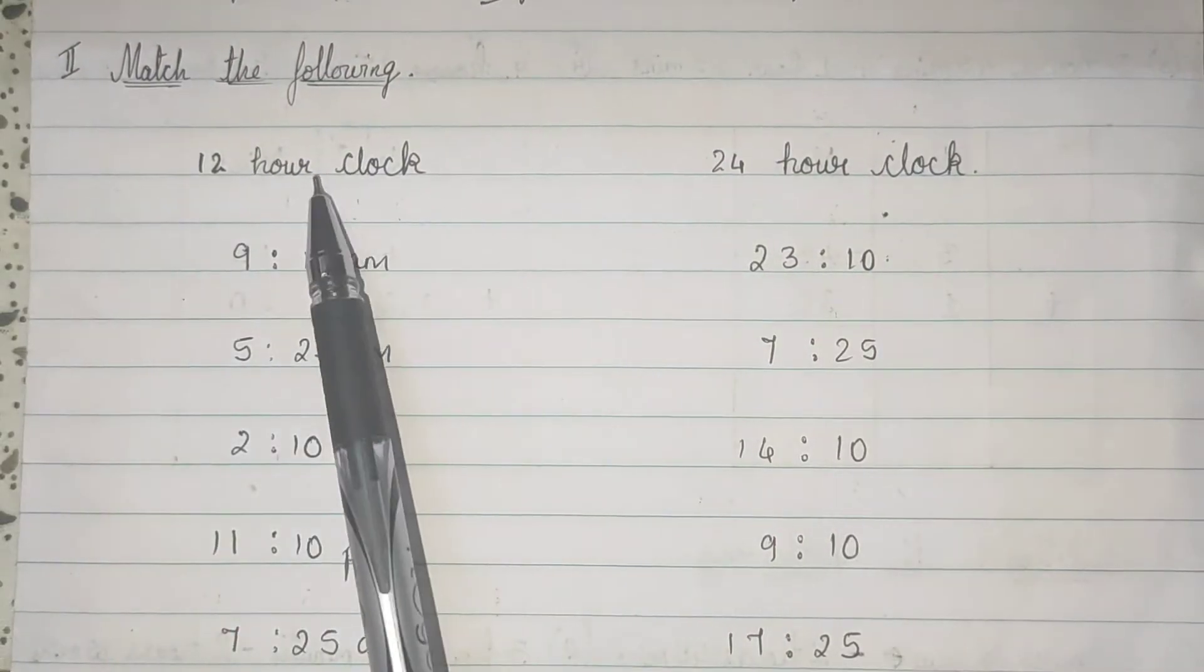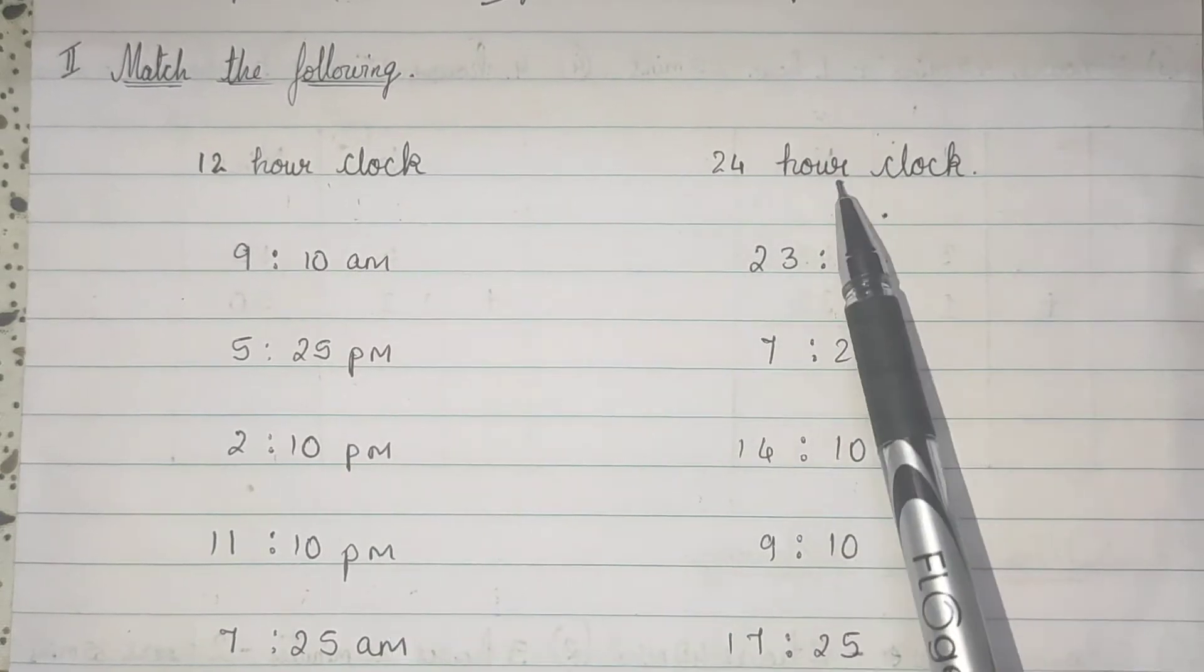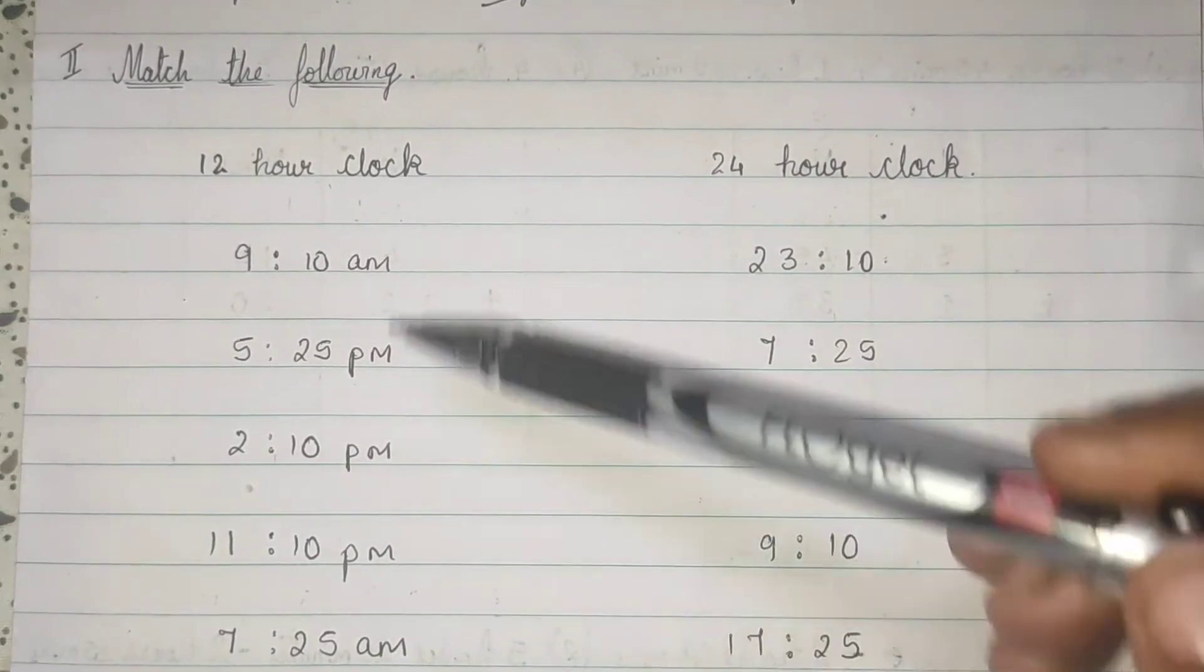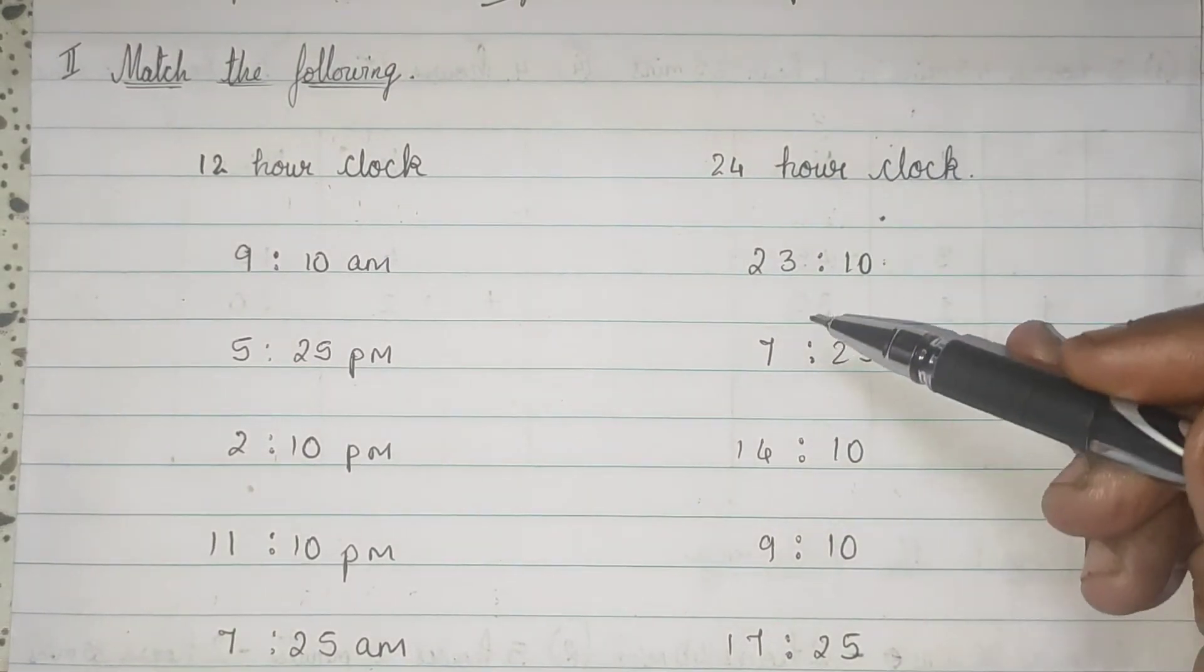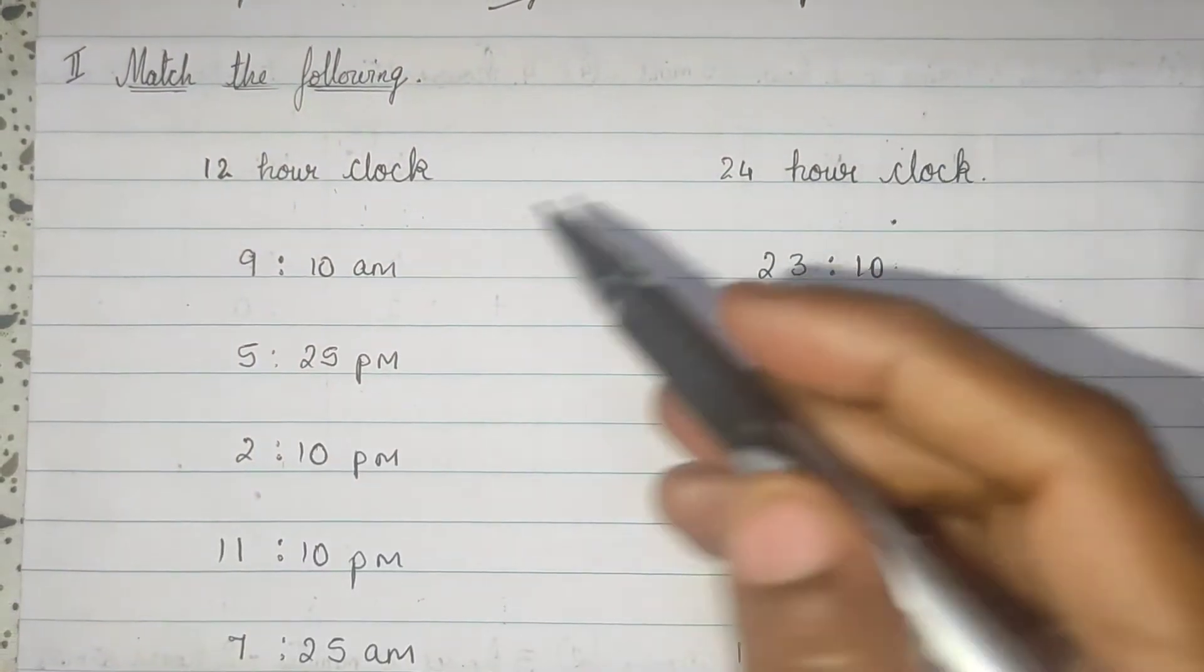Match the following. This is 12 hour clock time and 24 hour clock time. Yeh bara gante ke saap se diya gaya aur yeh chaubbis gante ke saap se. So, we have to match.